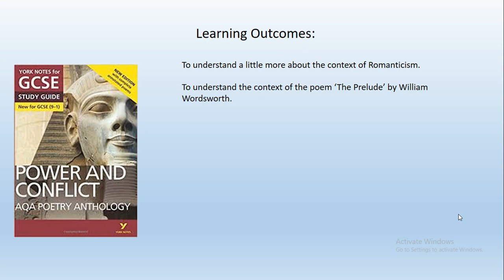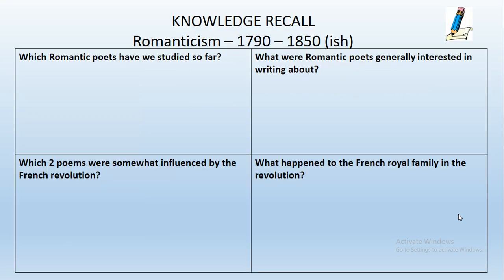We have looked at Romanticism before - it was probably back in April when we started to look at Romanticism and the Romantic poets. Today's starter is going to solely be about Romanticism. Some of you will remember these, some of you won't. The four questions are: which Romantic poets have we studied so far, bearing in mind the Romantic period is between 1790 to 1850? What were Romantic poets generally interested in writing about? Which two poems were somewhat influenced by the French Revolution? And what happened to the French royal family in the revolution? Pause the recording now and have a go at filling in that recall grid.